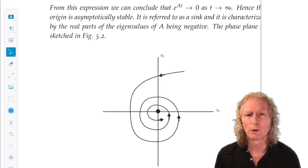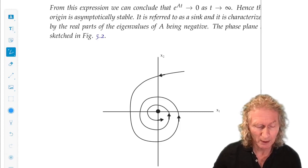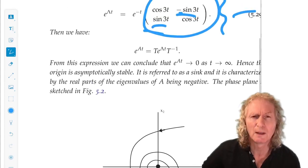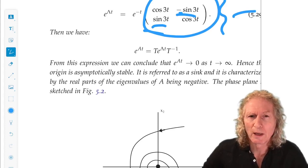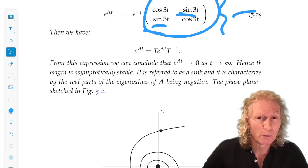But, the origin is asymptotically stable, and we see that that's governed by the real part of the eigenvalue, which is minus one.